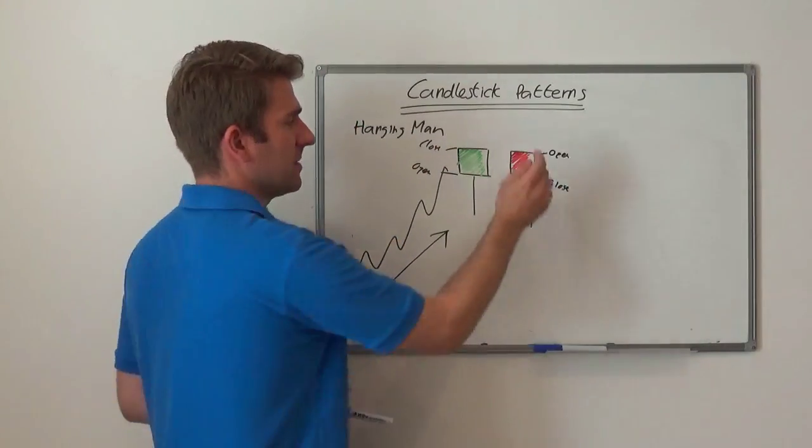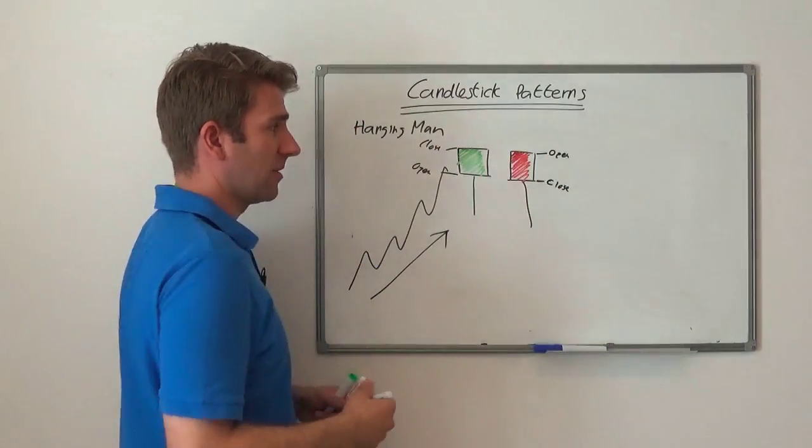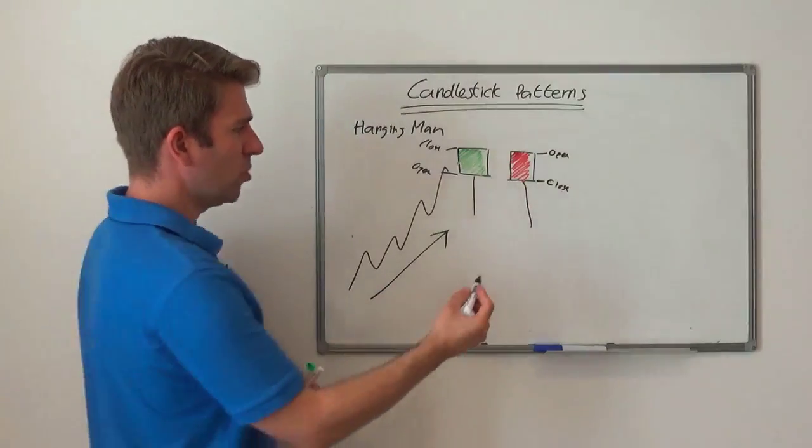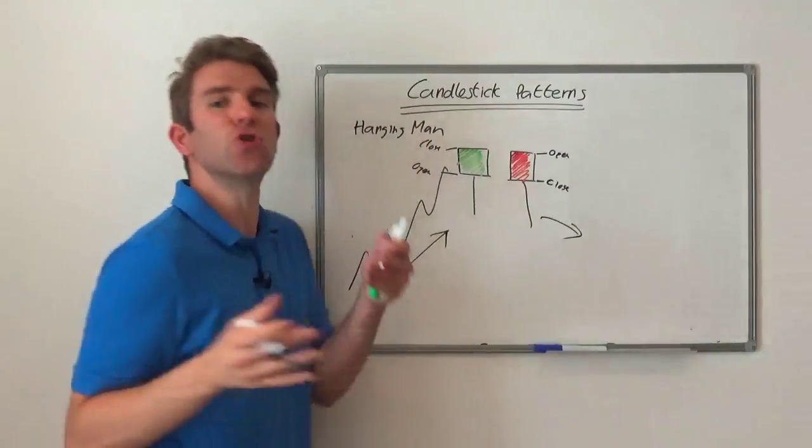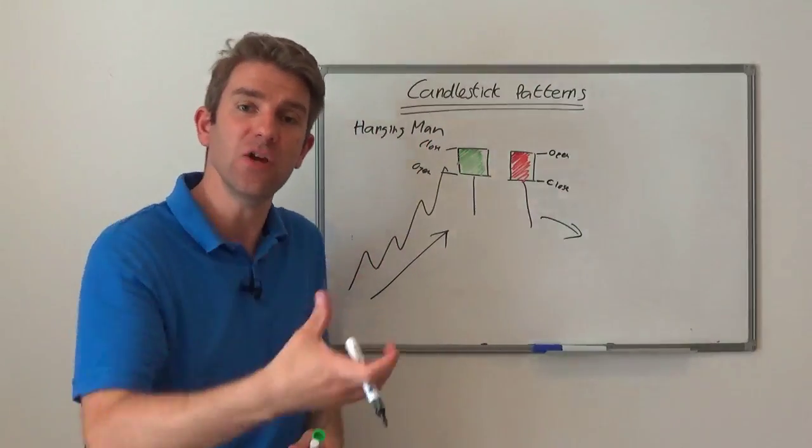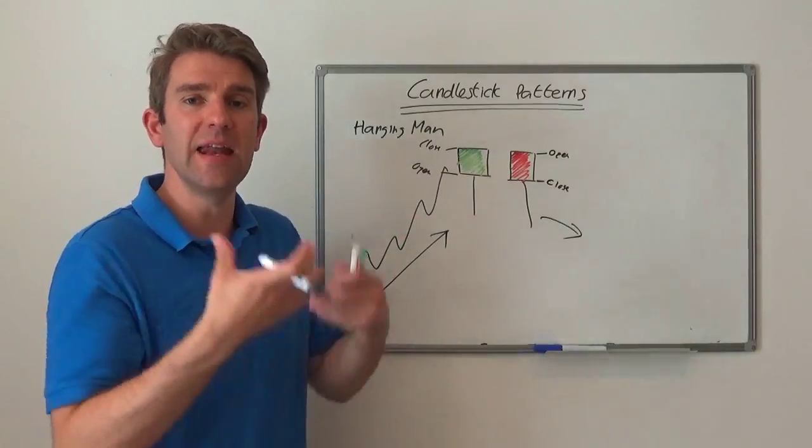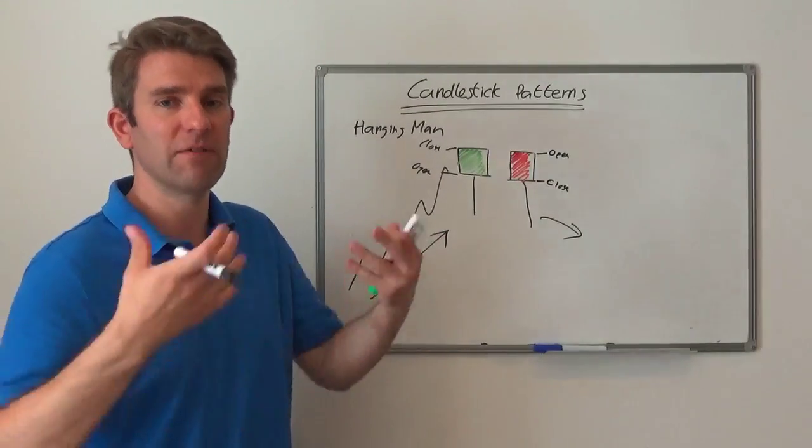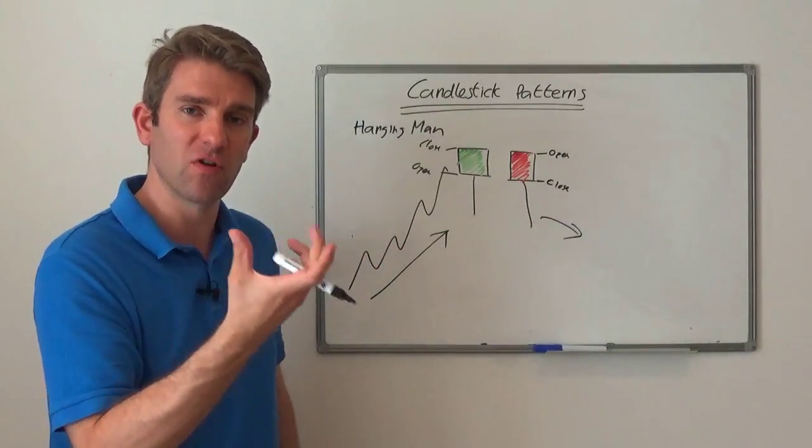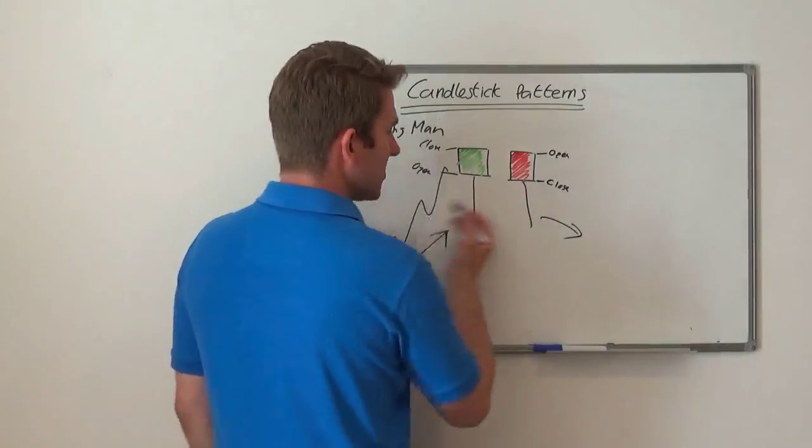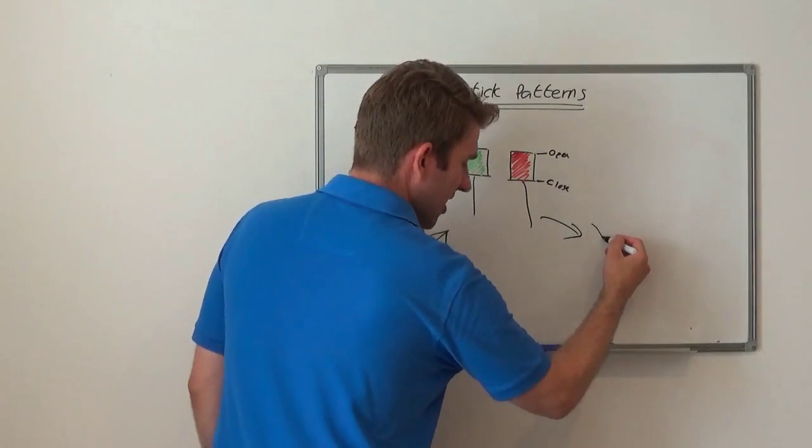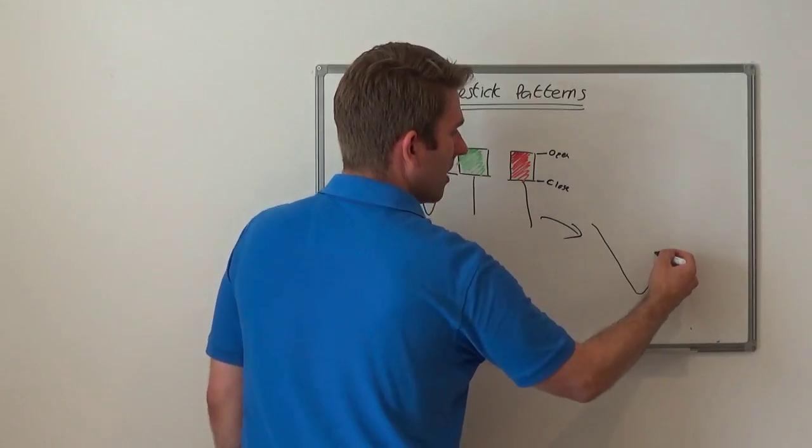A stronger candle might be one with a close that's a black or red candle, but really what you're looking at is what's happened intraday. That's the good thing about candlestick patterns - they're telling you what's happened intraday in a brief summary.